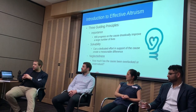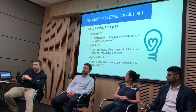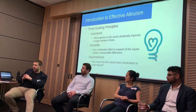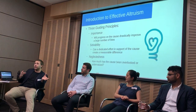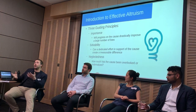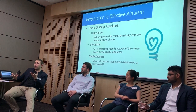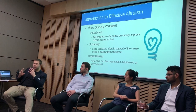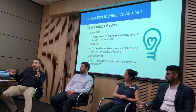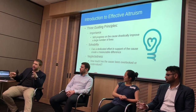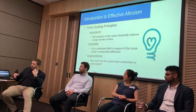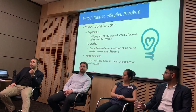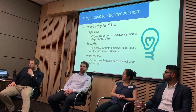And finally, neglectedness: are other people already doing this? If it's a solvable and very important cause but there's lots of money already being dedicated there, we won't be able to achieve as much marginal benefit by putting our own resources in that area. So as effective policy change, we want to pursue causes and methods that are important, that achieve solvable change, and that aren't being looked at by many other people.